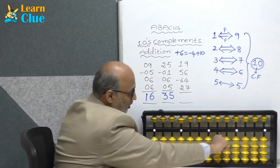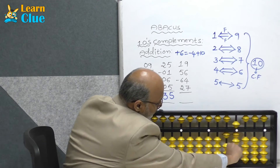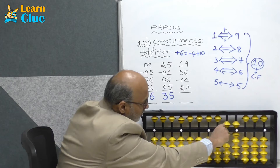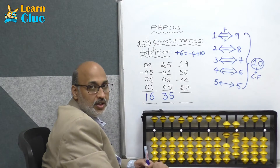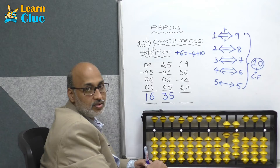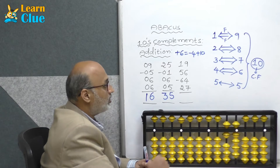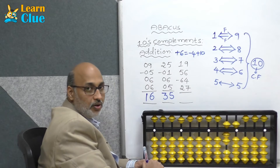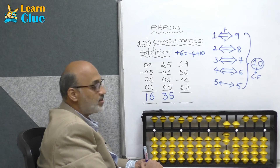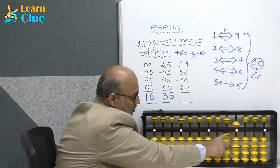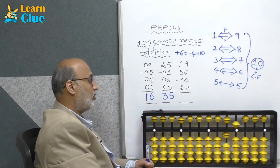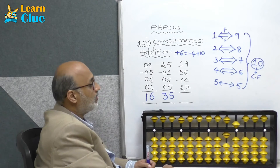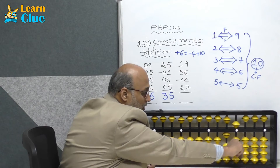Next problem: 19 — that is 10 plus 9. Then plus 56 — plus 50 plus 6. Who is the friend of 6? 4. So minus 4 plus 10. Now they are asking minus 64 — that is minus 60 minus 4. How to do minus 4? Apply 5s complements: minus 4 technique is plus 1 minus 5.